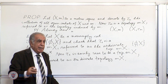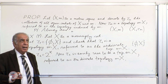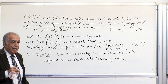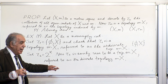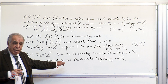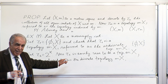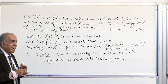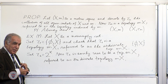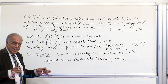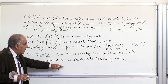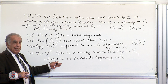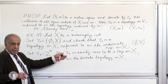It may not be clear by what we have done so far why this topology is referred to as discrete, but we'll see that next week — why it deserves the name. There is no ambiguity there. There is some metric which induces tau_2.